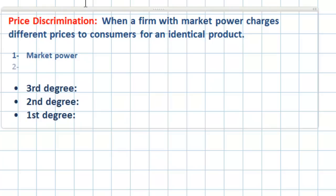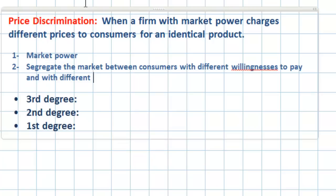Second, the firm must be able to segregate the market between consumers with different willingness to pay or with different price elasticities of demand. How can we price discriminate if we don't know what different consumers are willing to pay for a good? That is basically what this second prerequisite for price discrimination refers to.